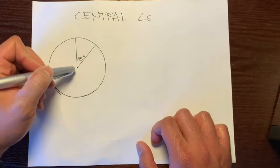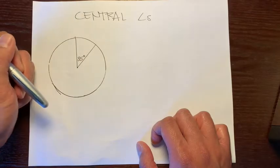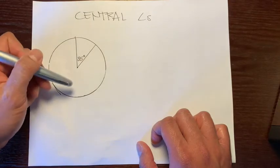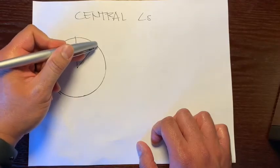Central angles are formed when you have two radii in a circle that form an angle. It's called a central angle because the radius of a circle starts from the center and goes to the circle.